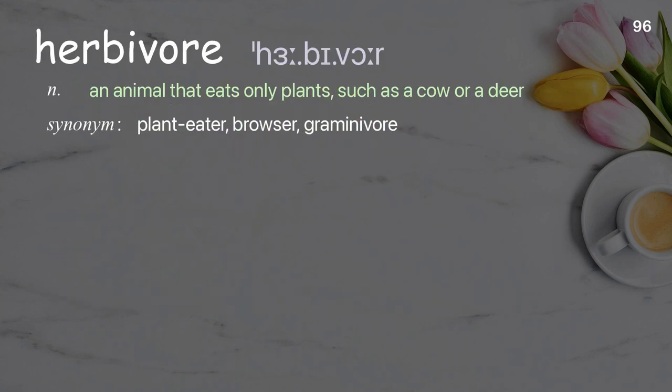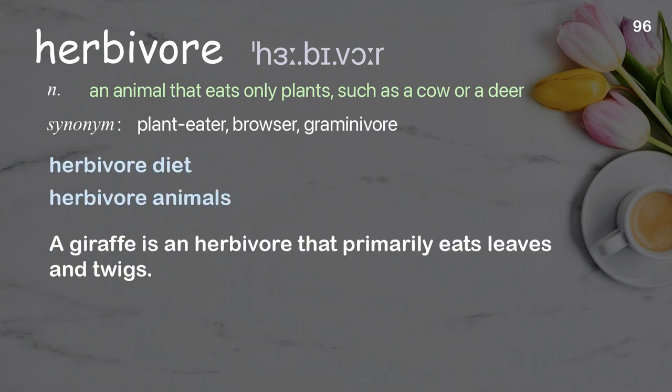Herbivore. An animal that eats only plants, such as a cow or a deer. Examples: herbivore diet, herbivore animals. A giraffe is an herbivore that primarily eats leaves and twigs.